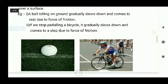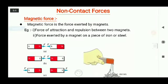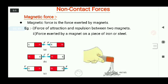Now let's move to non-contact forces. The first force we will discuss is magnetic force. Magnets exert force on other magnets and even on materials like iron. A magnet can repel or attract another magnet depending on the nearby poles, and it can attract nails or materials made of iron. This attraction and repulsion takes place even from a distance, so magnetic force is classified under non-contact forces.